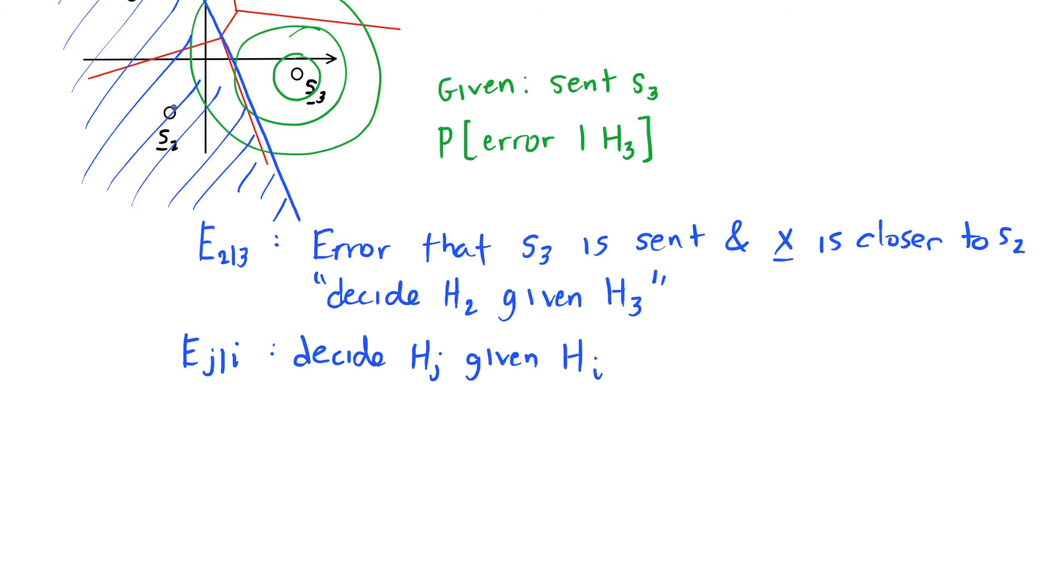Whenever we're dividing the space into two, we can take it as a single integral of a single Gaussian random variable. We can realign our axis to be this black line between s2 and s3. Along that axis, because I have a Gaussian random variable with uncorrelated components, the distribution along this new axis is also Gaussian centered here at s3. We're asking about the probability that this scalar Gaussian random variable is on the wrong side of this blue threshold.